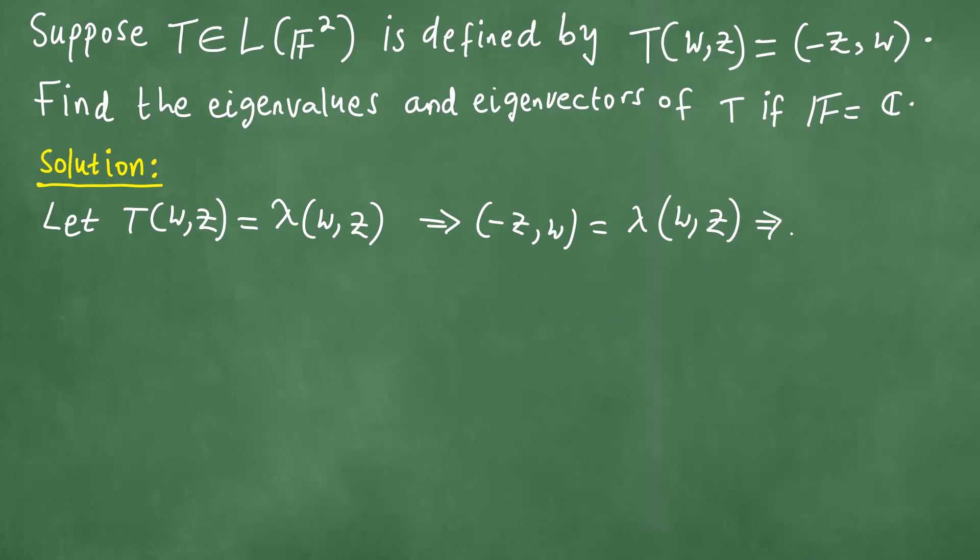So this actually tells us that (-z,w) is equal to (λw, λz), like this.